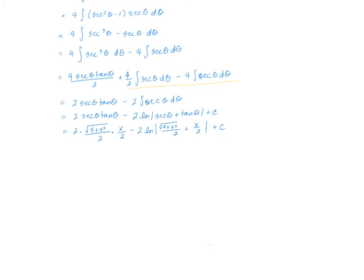Now it's just a matter of cleaning this up. The twos cancel, and I can bring this together as x times the square root of four plus x squared over two, minus two times the natural log. Inside the absolute values, the fractions have the same denominator, so I can write it as the square root of four plus x squared plus x, all over two, plus C. Our goal was to write everything in terms of x, and we've done that.